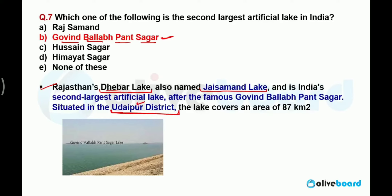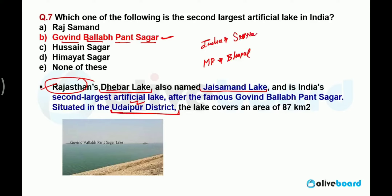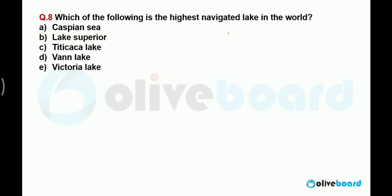With Udaipur in mind, which city is known as the lake city? Remember, each state has almost their own lake cities. The lake city of Madhya Pradesh is Bhopal. The lake city of Rajasthan is Udaipur. But when the question asks about the lake city of India, the answer is Srinagar. Srinagar is the lake city of India.